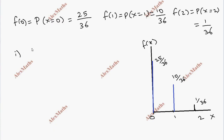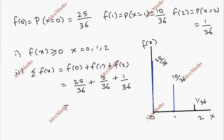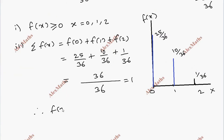In the first condition, f(x) is greater than or equal to 0 for x equal to 0, 1, 2. The sum sigma f(x) equals f(0) + f(1) + f(2) = 25/36 + 10/36 + 1/36 = 36/36 = 1. This confirms it is a valid probability mass function.